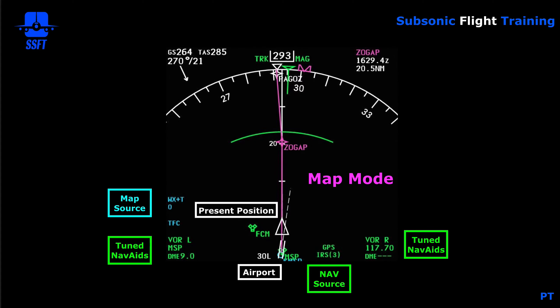Moving to the bottom of the map mode, you have the map source on the left. When you make selections on your EFIS control panel — such as waypoint or airport — those will be labeled in this section. Right now the weather radar is on in weather-plus-turbulence mode. TFC indicates the TCAS is on with traffic displayed. If you were to put the airport switch on, it would show ARPT in blue, and waypoints would be displayed on the ND.